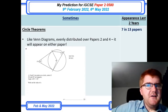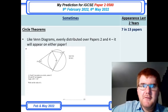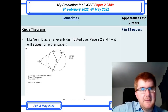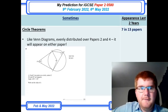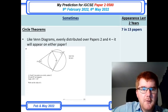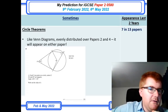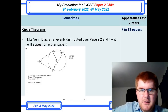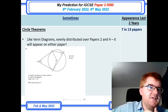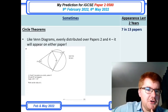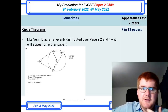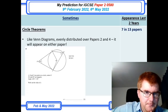Circle theorems — also a favourite, very similar to what we said on Venn diagrams and probability. It's often evenly distributed over papers two and four, meaning it could appear on both. A very typical circle theorem question requires you to find a particular angle using the angle facts that you know.